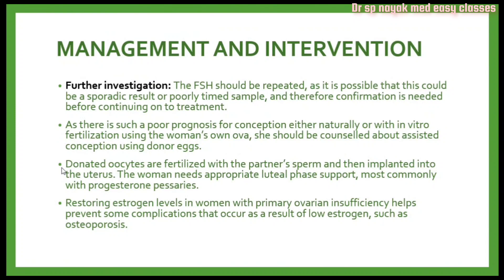Management and intervention: the follicle stimulating hormone should be repeated to confirm it is not a sporadic or poorly timed result before continuing to treatment. Given the poor prognosis for conception either naturally or with IVF using the woman's own ova, she should be counseled about assisted conception using donor eggs. Donated oocytes are fertilized with the partner's sperm and implanted into the uterus, requiring appropriate luteal phase support, most commonly with progesterone pessaries, since progesterone relaxes the uterus and supports pregnancies. Restoring estrogen levels also helps prevent complications such as osteoporosis.